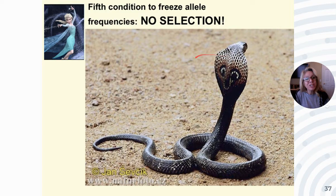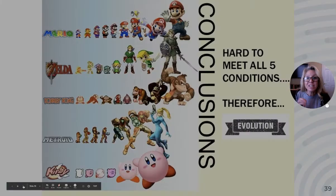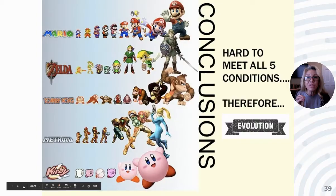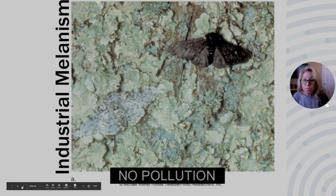These five conditions — no selection, no mutation, no migration, always large populations, always random mating — are really hard to meet. Since we can't meet those five conditions, evolution is occurring. Since it is difficult not to violate these conditions in natural populations, alleles must be changing, and therefore evolution must be occurring.